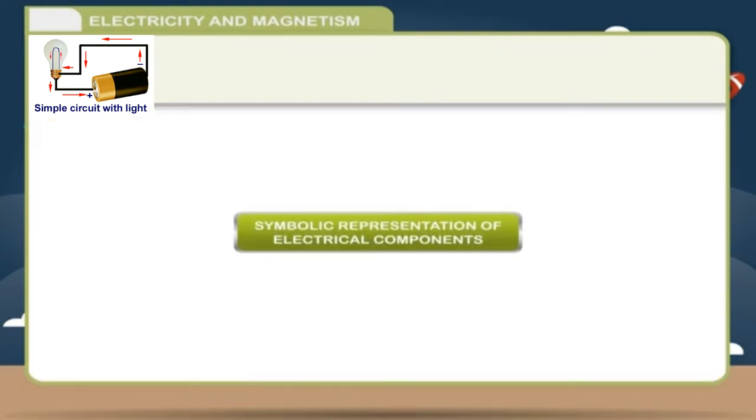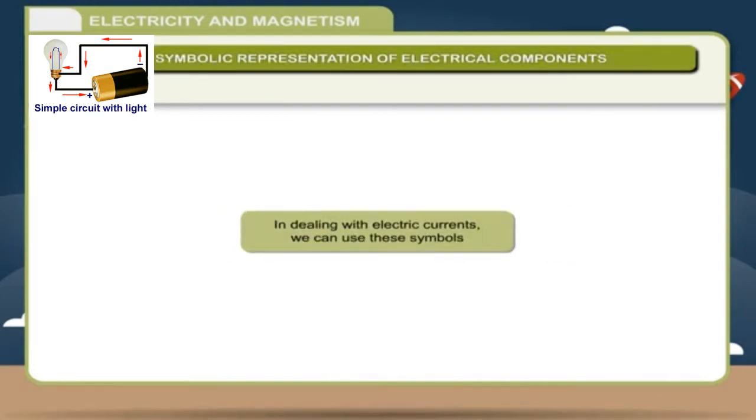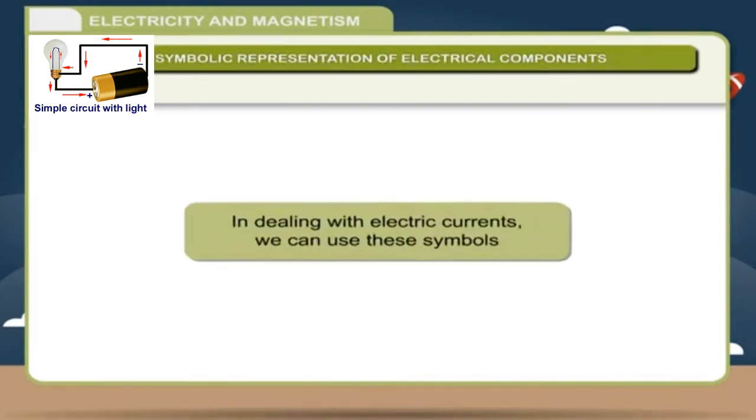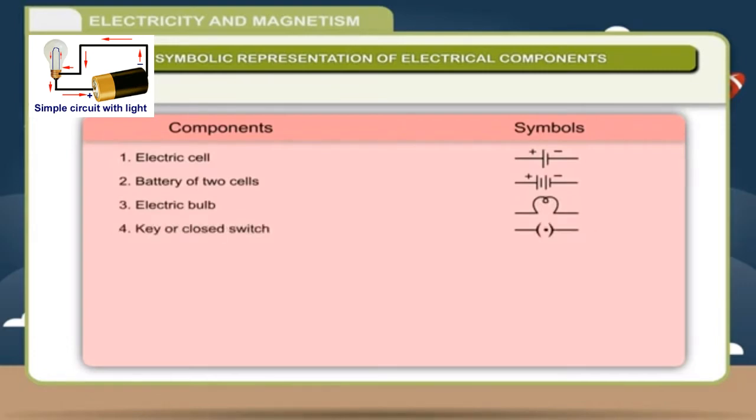Symbolic representation of electrical components. In dealing with electric currents, we can use these symbols. Components and Symbols: 1st Electric Cell, 2nd Battery of 2 cells, 3rd Electric Bulb, 4th Key or Closed Switch, 5th Open Switch, 6th Connecting Wire, 7th Ammeter, 8th Voltmeter, 9th Resistance.